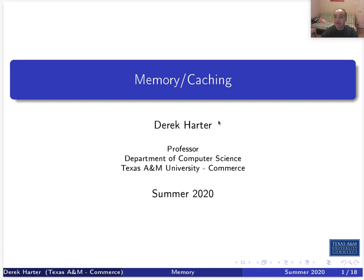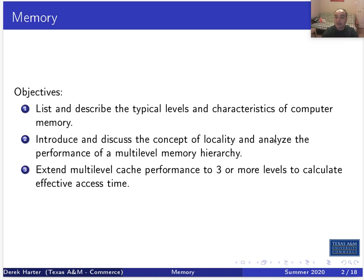Hi, my name is Derek. I'm your instructor for the 430 undergraduate operating systems class. Today we're going to be looking at the basics of memory and the performance of memory when we have caching — so different levels of caching. This is from Unit 1, Chapter 1 of your textbook. Our objectives today: first, I want to talk about the physical characteristics of memory.